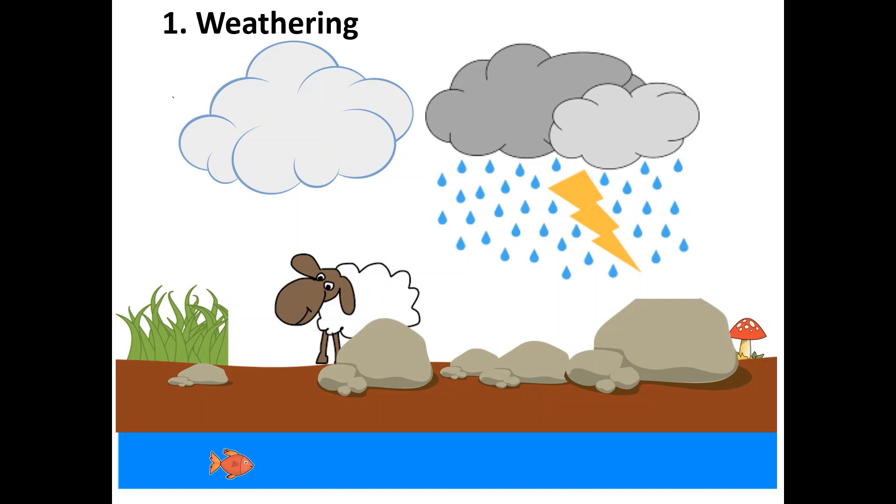Phosphorus is found in rocks. Rains and weathering break down the phosphorus in rocks and it travels to the soils and the water sources.